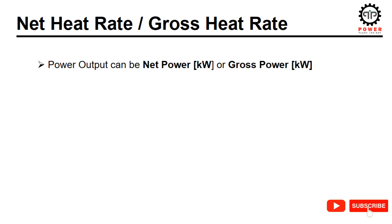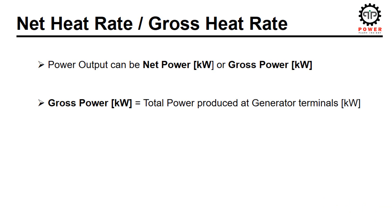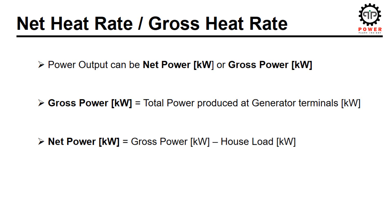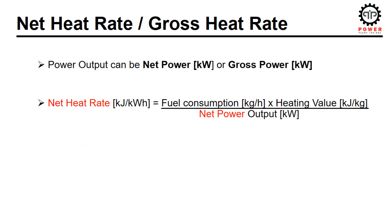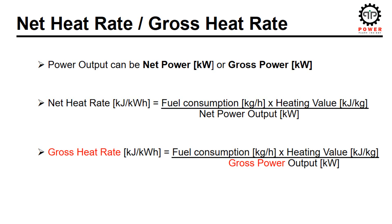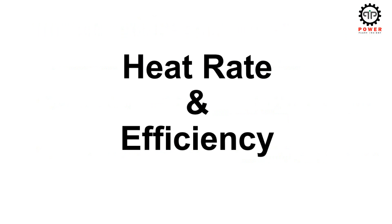Net heat rate and gross heat rate: there are two types of power obtained from a power plant — net power and gross power. Total power produced at the generator terminal is called gross power; it is the total power generation of the plant. Net power is obtained by subtracting the house load of the plant from gross power. House load is the in-house power consumption used within the plant for the operation of pumps, motors, and different auxiliaries. When net power is used in the heat rate formula, the result is net heat rate; when gross power is used, the outcome is gross heat rate.